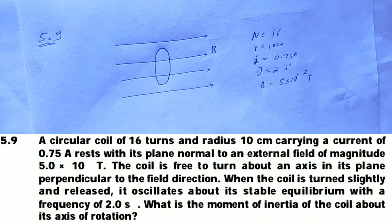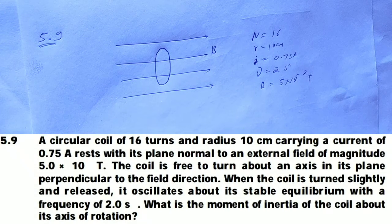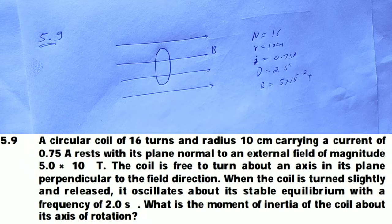A circular coil of 16 turns and radius 10 cm carrying a current of 0.75 ampere rests with its plane normal to an external field of magnitude 5 into 10 to the power minus 2. The coil is free to turn about its axis in its plane perpendicular to the field direction. When the coil is turned slightly and released, it oscillates about its stable equilibrium with a frequency of 2 per second. What is the moment of inertia of the coil about its axis of rotation?